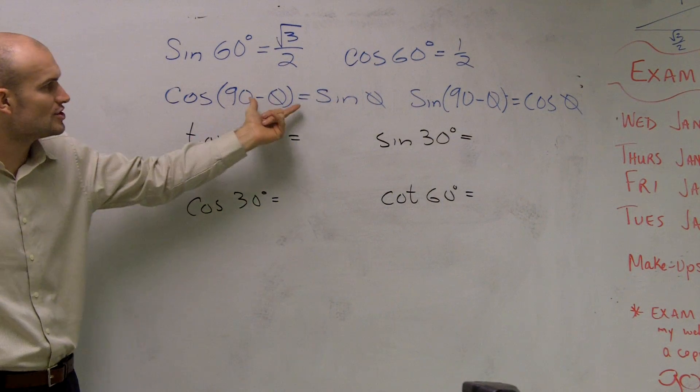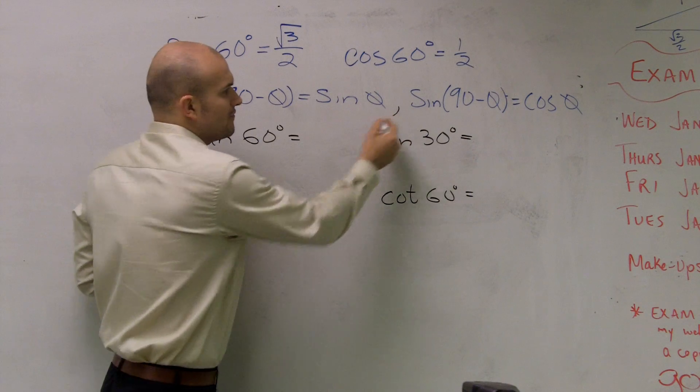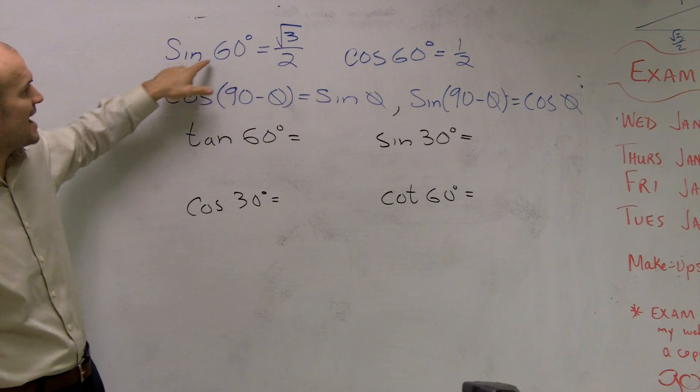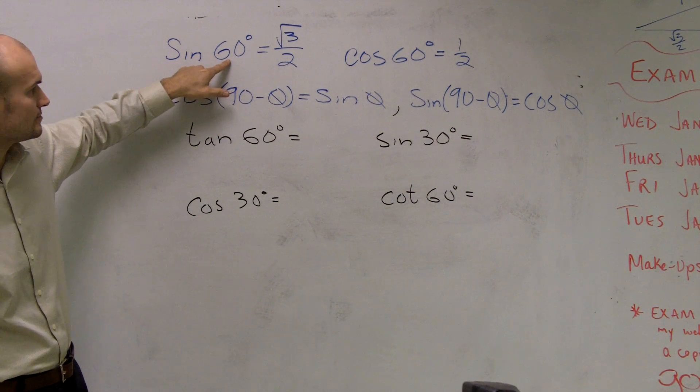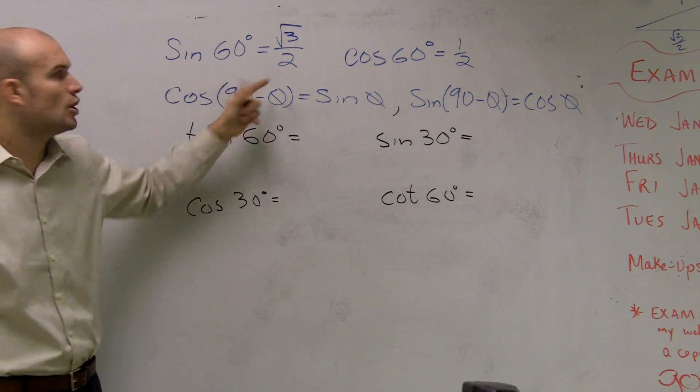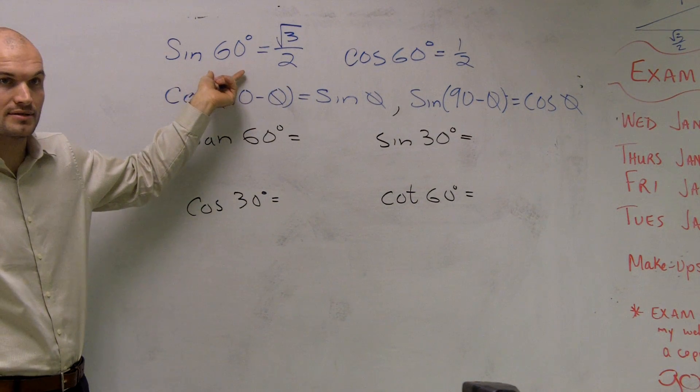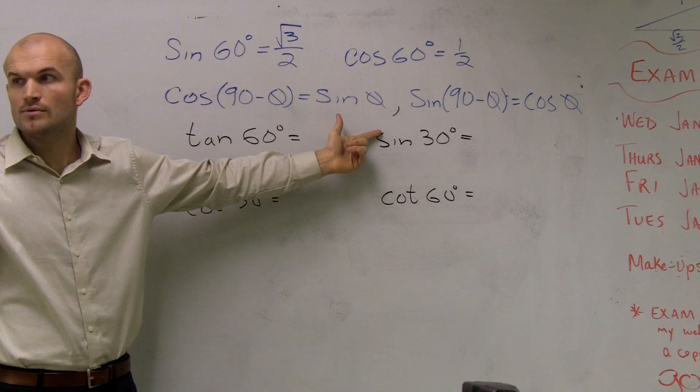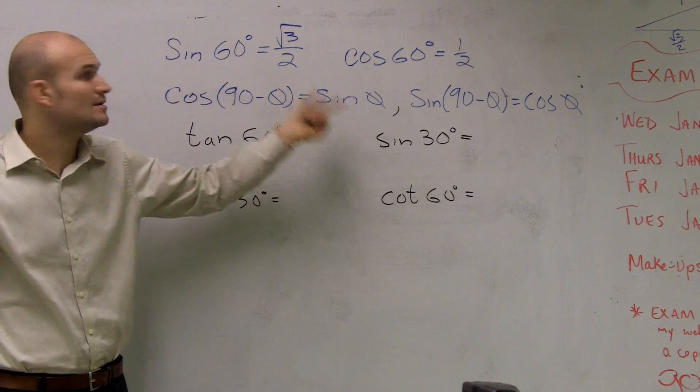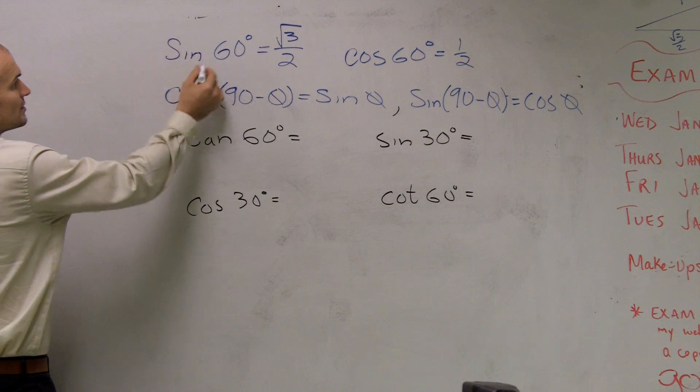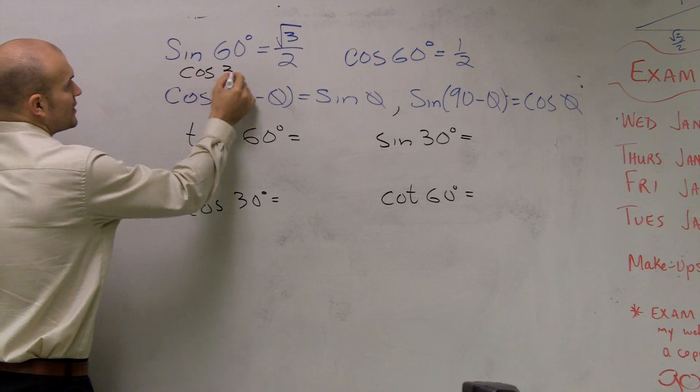However, we know by our co-functions, complementary co-function identities, that what I can do is, the sine of 60 degrees, if I plug that in, the sine of 60 degrees is the same thing as the cosine of 30 degrees. If I plug it in by using these co-function identities. The sine of 60 degrees is equal to the cosine of 30 degrees.